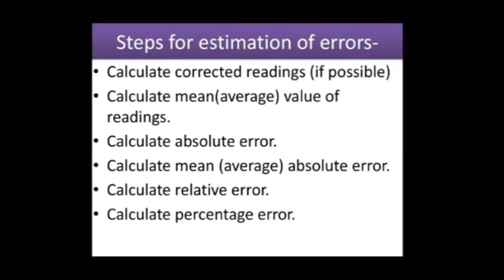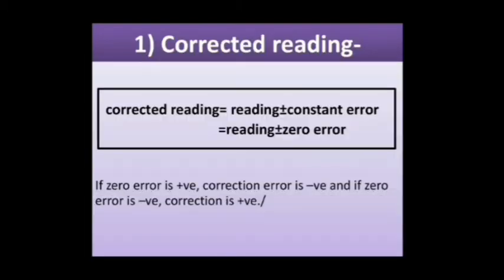The steps for estimation of errors are: first, calculate corrected readings if possible; second, calculate the mean, i.e., average value of readings; third, calculate absolute error; fourth, calculate mean or average absolute error; fifth, calculate relative error; sixth, calculate percentage error. To understand this process, we will go through one example.